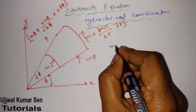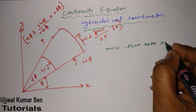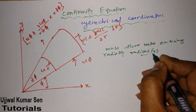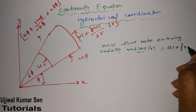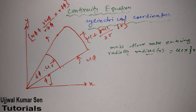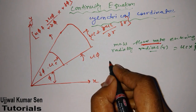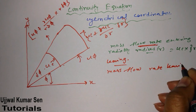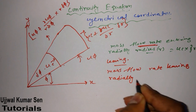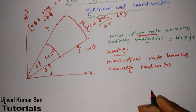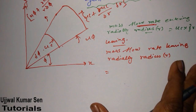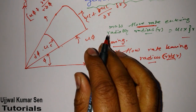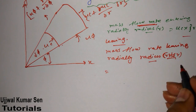If I am looking at the mass flow rate entering radially, the radius I am taking is: mass flow rate = u_c · ρ · r · δφ · δz. Now, if something is entering and it is an open channel, then definitely something would be leaving. So I can say mass flow rate leaving radially at radius r plus δr, where δr is the small incremental part we are considering.